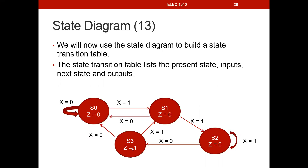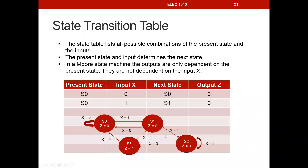We completed our state diagram. Our next step is to create a state transition table. We want to start accounting for the present state, our input values of x, our next state, and our output values. So if we're going to start creating a table, we'd at least start with these four columns: what is the present state, what is input x, what is our next state based on the present state and our input, and what is the output in each one of these states?